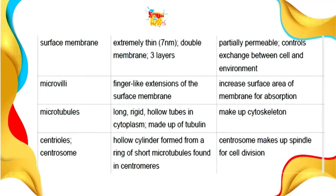The surface membrane is partially permeable and controls exchange between cells and the environment, preventing harm or damage to the cell. Microvilli increase the surface area of the membrane for absorption; they are finger-like extensions of the surface membrane and look somewhat like cilia but are not cilia. Microtubules make up the cytoskeleton, which is required during cell replication — during meiosis and mitosis — to form the spindle fibers. Centrosomes make up the spindle for cell division.